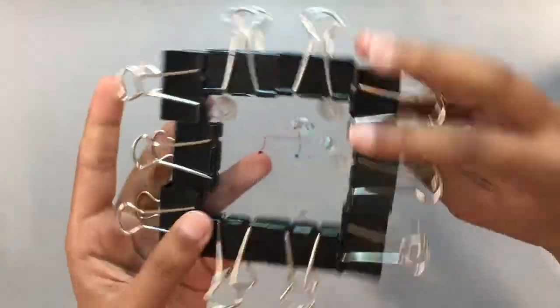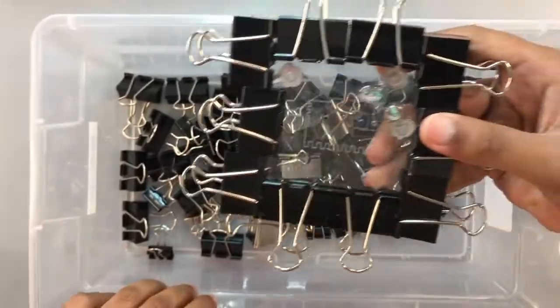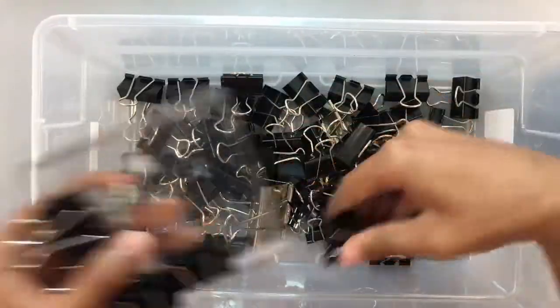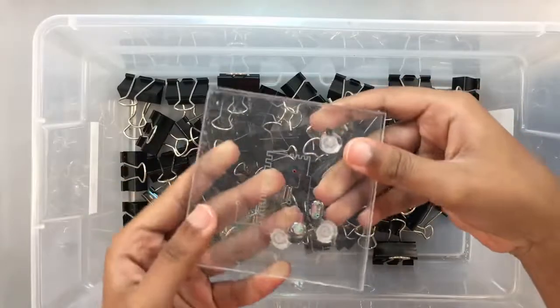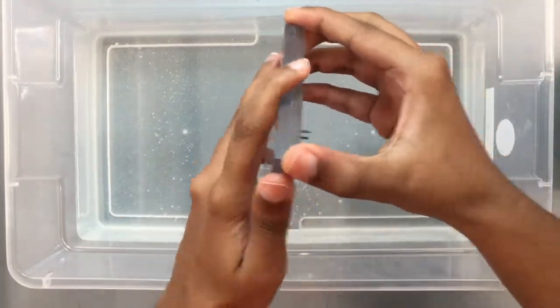First, remove all the binder clips around the chip. Carefully separate the layers without damaging the PDMS.